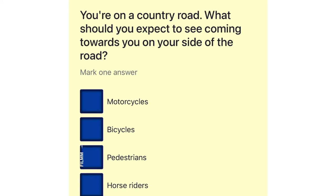You're on a country road. What should you expect to see coming towards you on your side of the road? Motorcycles. Bicycles. Pedestrians. Horse riders.